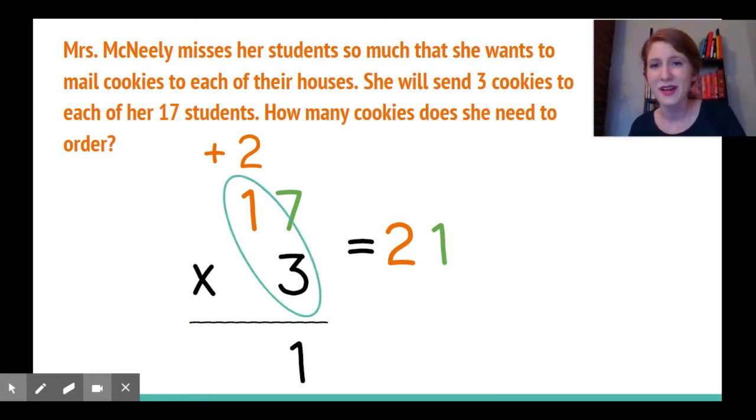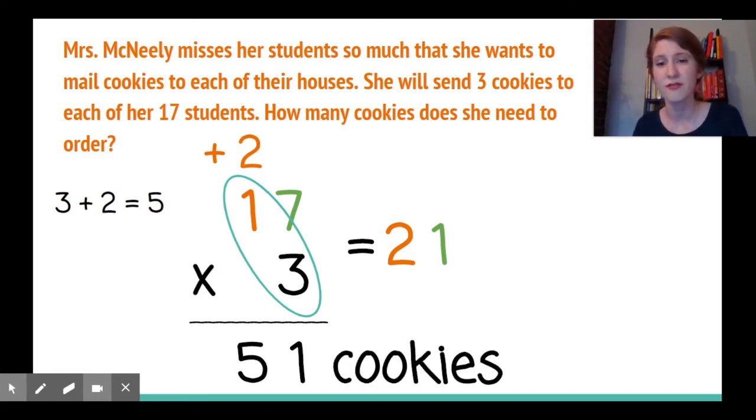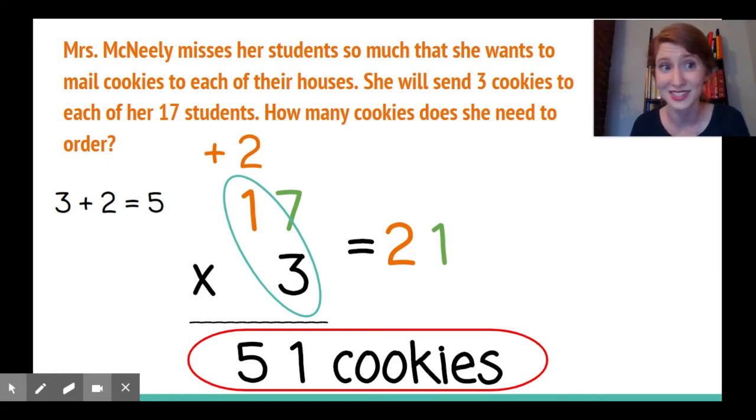Next step: I'll come into the tens place and now I'll multiply one times three. One times three equals three, but don't forget about my extra tens. Three tens plus two tens gives me five tens in the tens place. So now I can see that I need to order fifty-one cookies for my final product. That's right, two strategies, same answer.